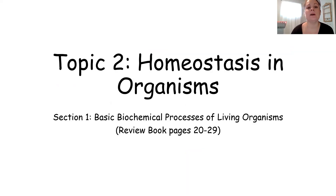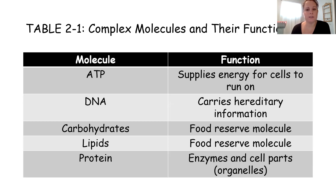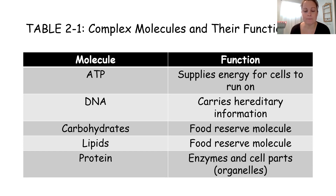The first section in the review book in topic two — homeostasis in organisms — is on basic biochemical processes of living organisms, and we're going to touch on photosynthesis and cellular respiration. In table 2-1, complex molecules and their function, this is a great review of organic molecules from topic one. It's important to know that ATP is the molecule that supplies energy, DNA provides hereditary or genetic information, carbohydrates and lipids are food reserve molecules, and proteins make up enzymes and organelles.